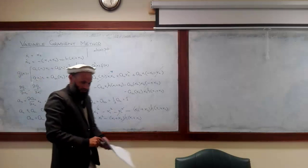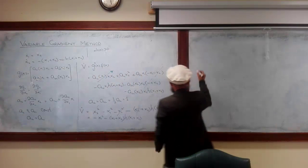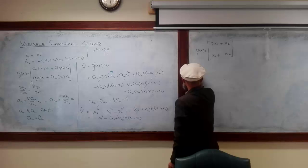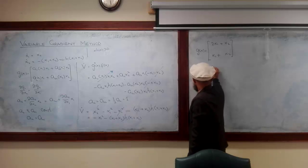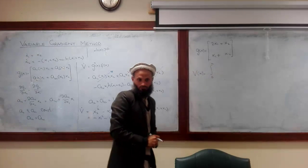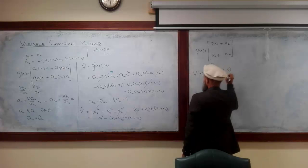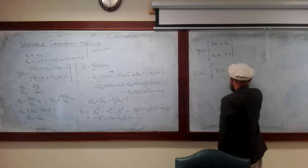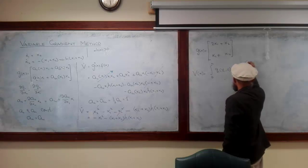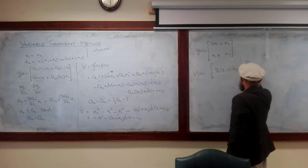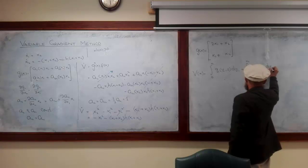With this selection G becomes, this is G of x and then what is V of x? How do we get V of x? Integration from 0 to x1 and then what?